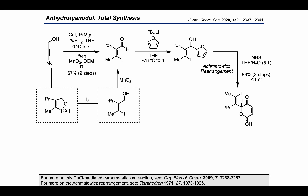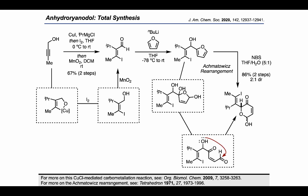This rearrangement proceeds by formation of the dihydroxylated furan, followed by a ring-opening step to form a 1,4-dicarbonyl that can undergo cyclization from the pendant alcohol to form the acetal product. It's important to emphasize that in this rearrangement, we're using the furan as a masked 1,4-dicarbonyl, which is a kind of conceptual antithesis to the Paal-Knorr synthesis.